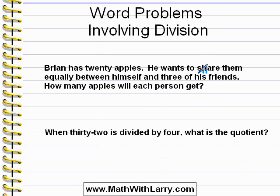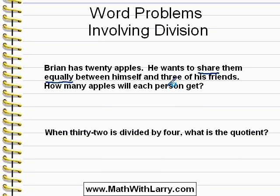The first thing I notice is the word 'share' — he's going to share something, which usually implies division. In particular, he's going to share them equally. He's sharing them between himself and three of his friends. We just have to be careful: he's actually sharing the apples among four people — he himself counts as one, plus three of his friends. So we simply do 20 divided by four, and we get five as the answer. Each person will get five apples.